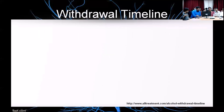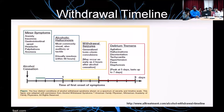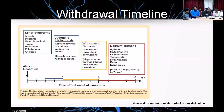Let's look at the timeline of withdrawal. We know that withdrawal starts around 6 hours after the last drink. It may start earlier, even up to 2 hours after the last drink in very heavy users. This may vary from minor symptoms — anxiety, insomnia, gastrointestinal upset including nausea and vomiting, headache, palpitations, and anorexia — which is what we would see in simple withdrawal that doesn't worry us too much.